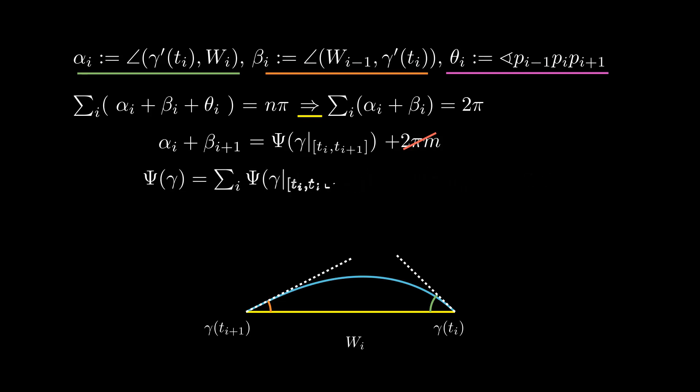Now summing over all i, we can conclude that the total signed curvature is precisely 2π. This finishes the proof of the theorem and today's lesson.